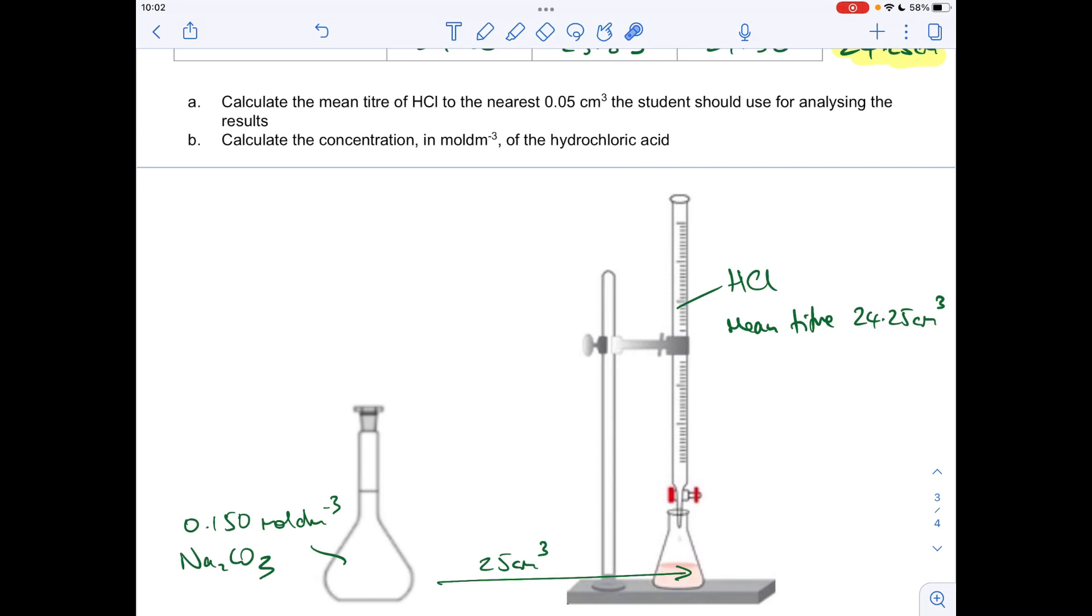The student pipettes the sodium carbonate solution using a 25 cm cubed pipette. So the student's taken 25 cm cubed of this solution out of the volumetric flask, put it into the conical flask, and they've done the titration.